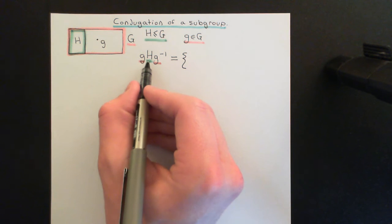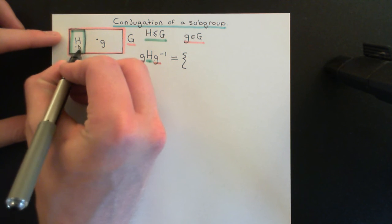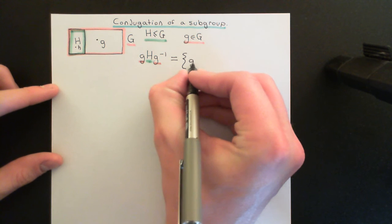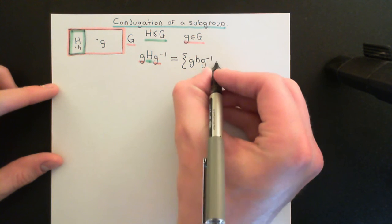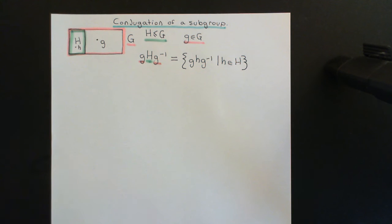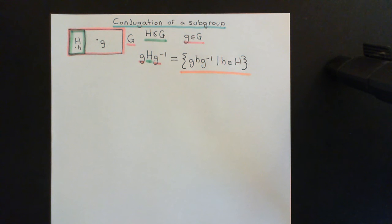If we want to work out what the conjugate of this subgroup capital H by the element little g is, all we're going to do is conjugate every single element — every single little h which is an element of capital H — by this element little g. We collect all of the answers together into a set, and that's going to be the conjugate of our subgroup capital H under this element little g. So this is the subset containing all things of the form g h g⁻¹ where h is an element of capital H.